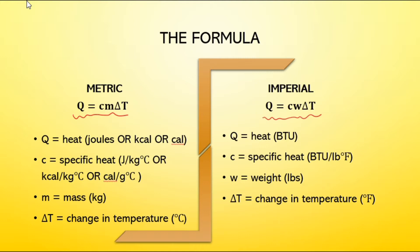We're trying to calculate the heat or the heat flow, that's Q. If we're in metric, we've got lots of choices: joules, kilocalories, calories. If we are in imperial, we're really just going to stick with BTUs.